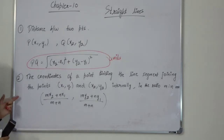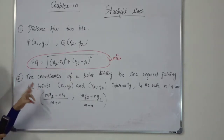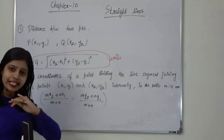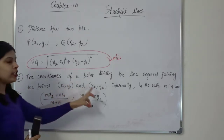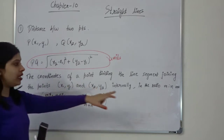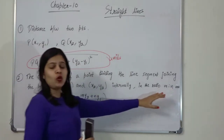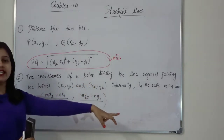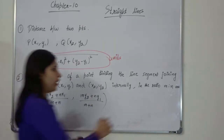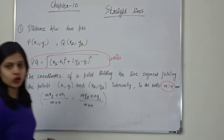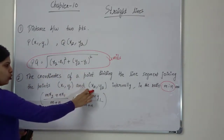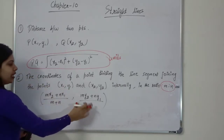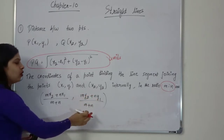Second point: if we have two points (x1, y1) and (x2, y2), the coordinates of the point dividing the line segment joining these two points internally in the ratio M to N are: x-coordinate equals (M·x2 + N·x1) divided by (M + N), and y-coordinate equals (M·y2 + N·y1) divided by (M + N).